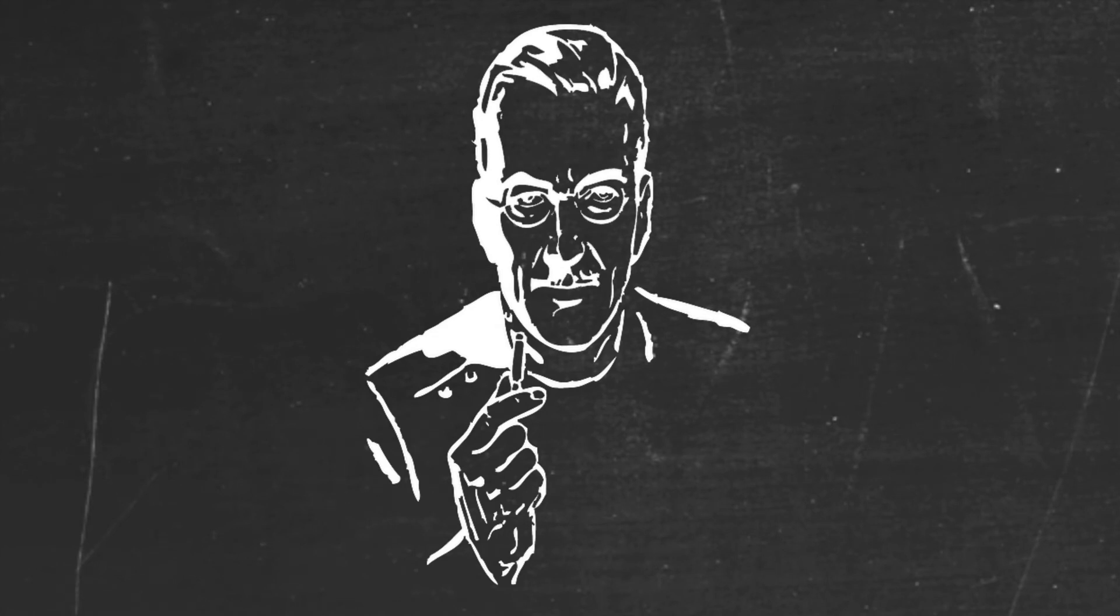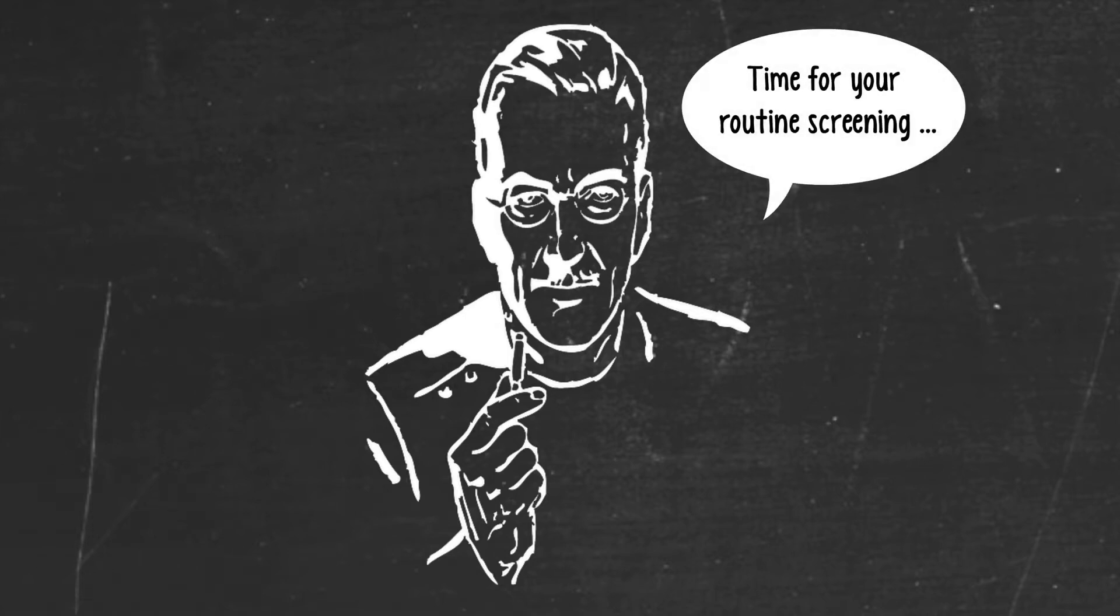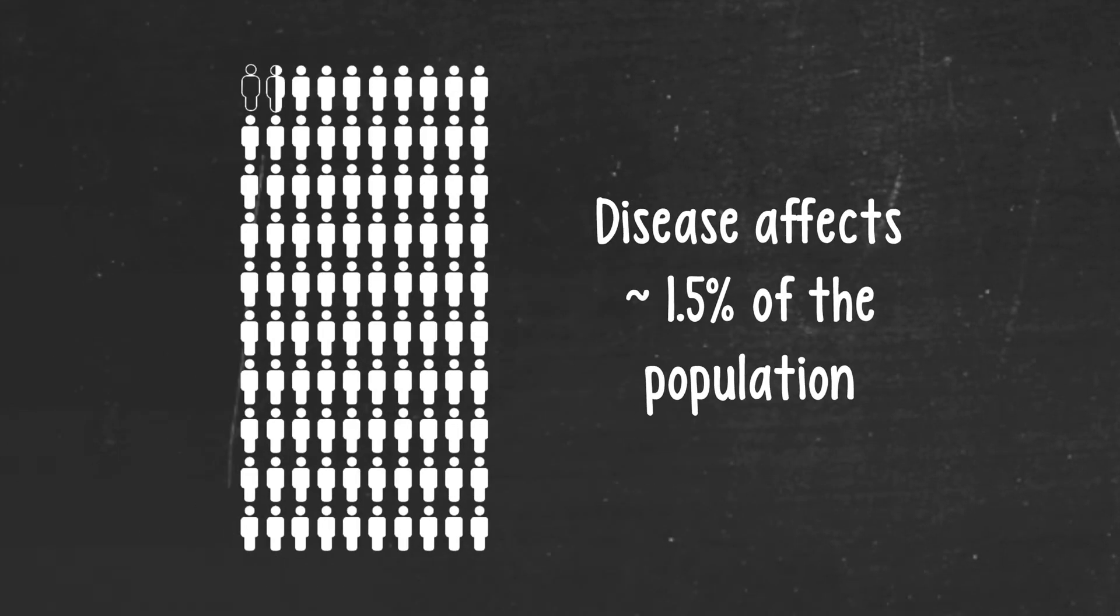So let's say you're at your doctor's office for your regular checkup and he says something to you like, time for your routine screening. And let's say for the sake of argument that the disease he wants to test you for affects about 1.5% of the population. In other words, you would expect to find this disease on average at about 1.5 people in every 100, or 15 in 1,000 if the concept of the half person makes you uneasy.